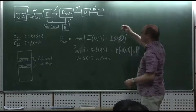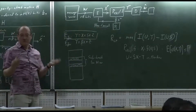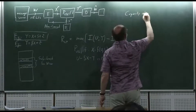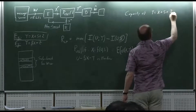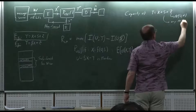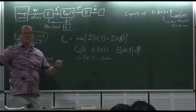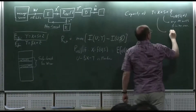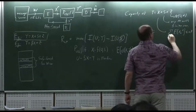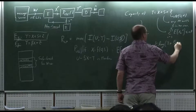For the Gaussian case Y = X + S + Z, where Z ~ N(0, N) and S has any finite variance, with a power constraint on X, the capacity is (1/2) log(1 + P/N). So interference can be completely removed. This is known as dirty paper coding.